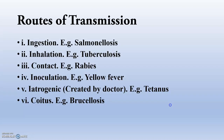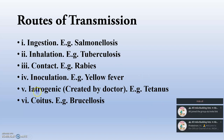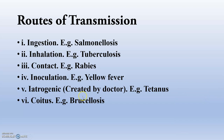Routes of transmission: ingestion — example, salmonellosis; inhalation — example, tuberculosis; contact — example, rabies; inoculation — example, yellow fever; iatrogenic (created by the doctor) — example, tetanus; coitus — example, brucellosis and genital campylobacteriosis.